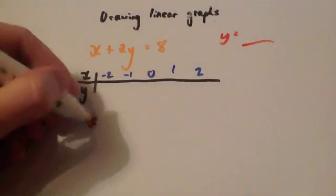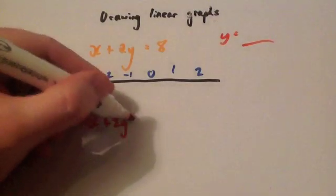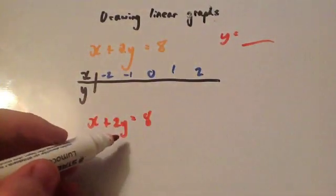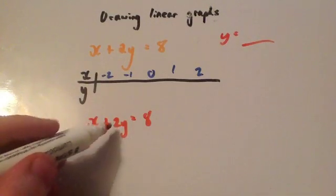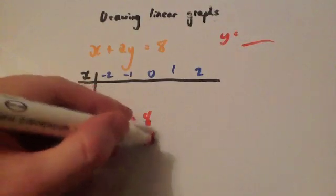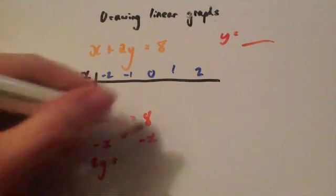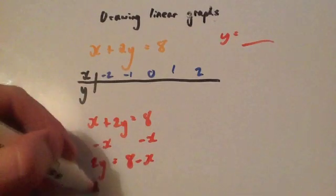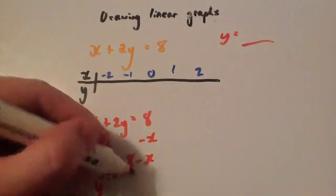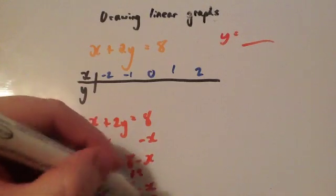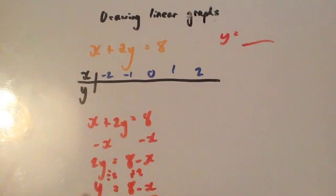You've got x plus 2y equals 8. To make y the subject, get y on the left-hand side on its own. Take away x from both sides to get 2y equals 8 minus x. Then divide both sides by 2 to get y equals (8 minus x) divided by 2. So to find the y value, you do 8, subtract the x value, and divide by 2.